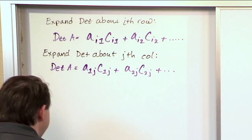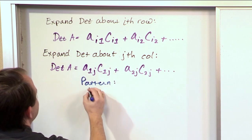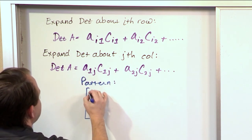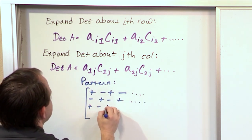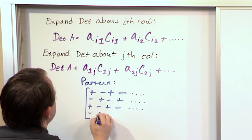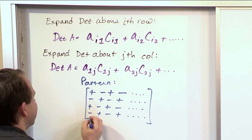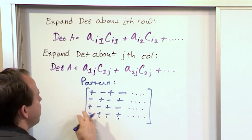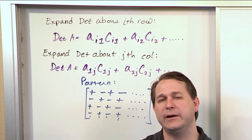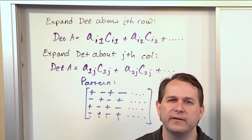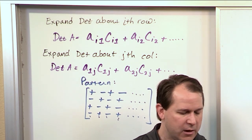To remind you of that, here's the pattern of cofactor signs: plus, minus, plus, minus on the first row; minus, plus, minus, plus on the second row; and it continues — plus, minus, plus, minus — keeping that checkerboard pattern forever. You're typically not going to have a matrix larger than 4x4, as it gets cumbersome. In real life you don't really have to deal with matrices much bigger than that, because most real systems don't have that many simultaneous variables.